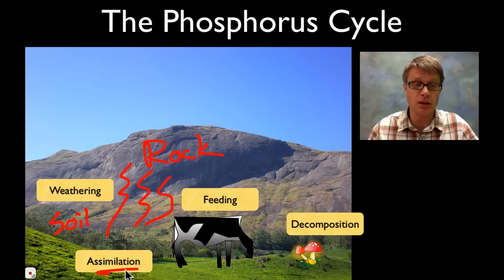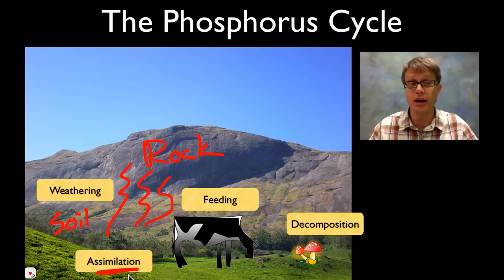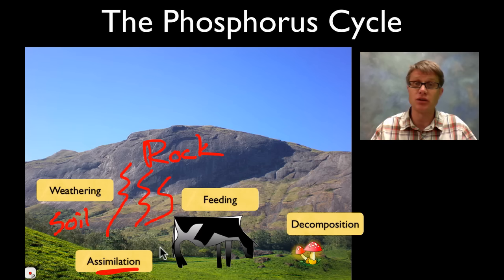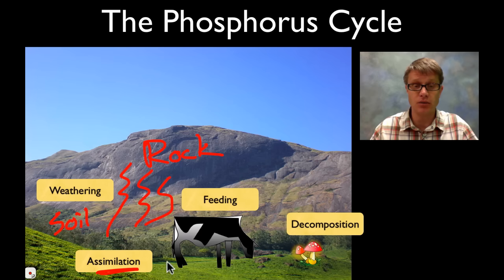It's then going to be assimilated — in other words that phosphorus is going to be absorbed through plant roots so they can make things like nucleic material or ATP. How do animals get it? Well they're going to feed on that, so they're going to bring the phosphorus into them from the plants.